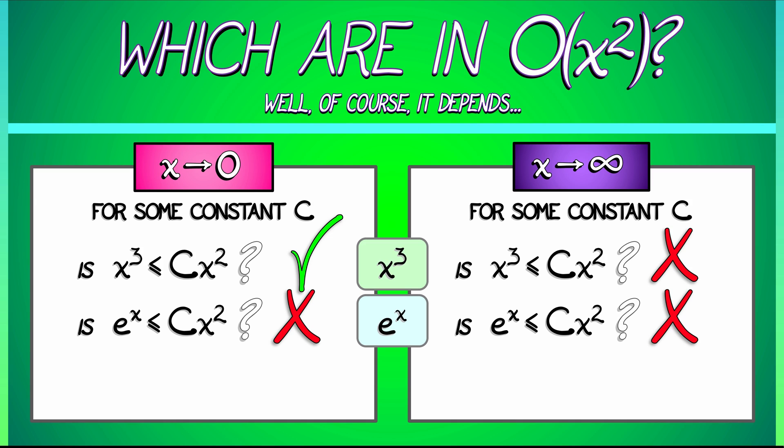Now, I'll leave it to you to try to figure out, is there a function that is in big O of x squared in both limits as x goes to zero and as x goes to infinity? I don't know. What about square root of x? Let's see.